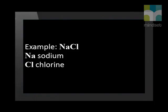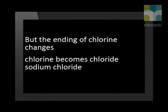What about the name of these compounds? The first word in the name is the name of the cation. The second word comes from the name of the anion. The name of the anion is the same as the name of the element, except that the end of the element name is taken off and 'ide' is added to the end. As we see, chlorine becomes chloride.